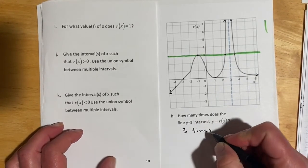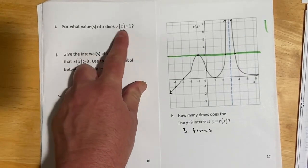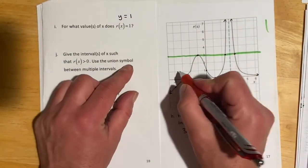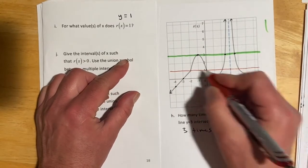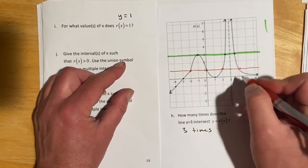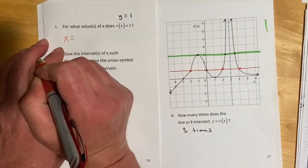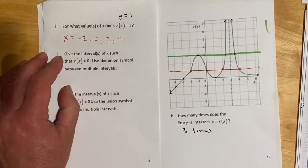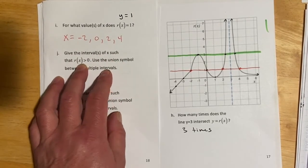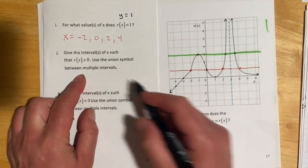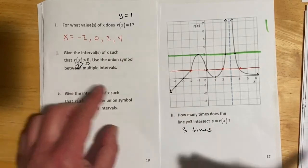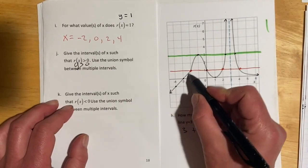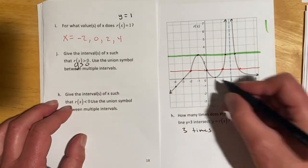For part I: for what values of X does R of X equal 1? That's the same as Y equals 1, a horizontal line. It looks like X would be negative 2, 0, 2, or 4. For part J: give the intervals of X such that R of X is greater than 0 — meaning above the X-axis. That's from negative 3 to 1, union 1 to 3, union 3 to infinity, all with parentheses. For part K: intervals where R of X is less than 0 — below the X-axis — that's just negative infinity to negative 3.